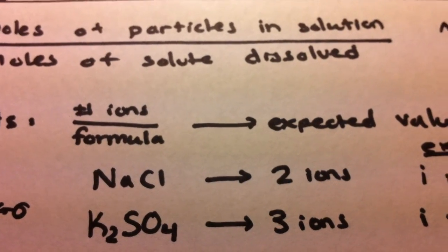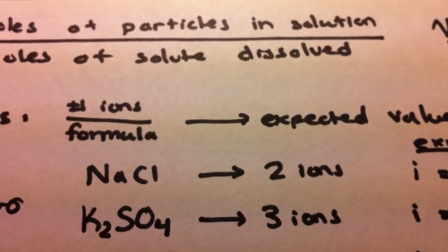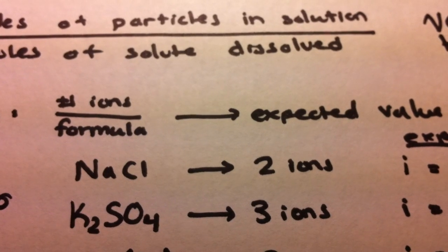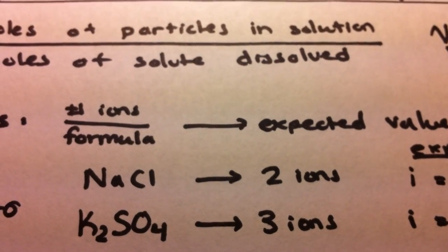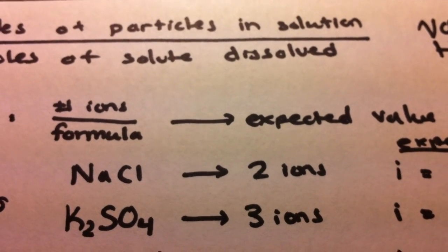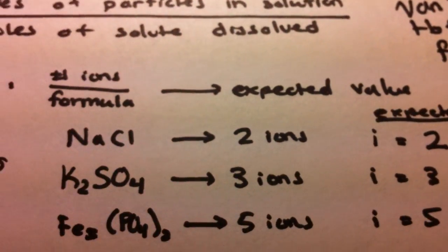For potassium sulfate, we're going to have three ions after the dissociation, referring to the two potassium ions and the one sulfate ion. So our i value will be 3.